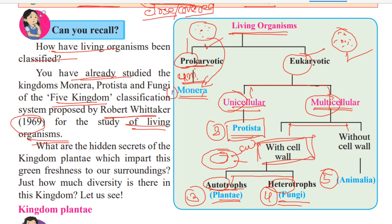Without cell wall means the cell has no outer cell wall. Robert Whittaker in 1969 classified all living organisms into five kingdoms, and organisms without a cell wall are placed in Kingdom Animalia.